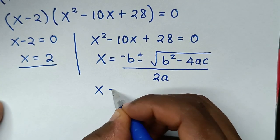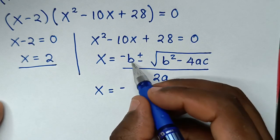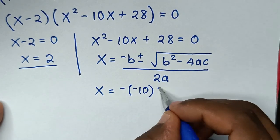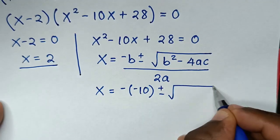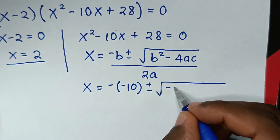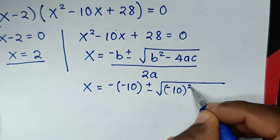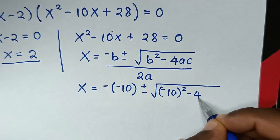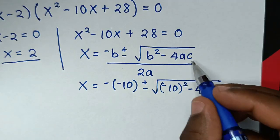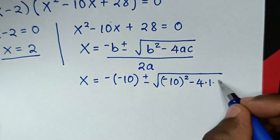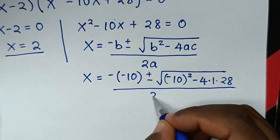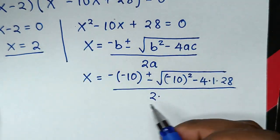Substituting values: b = -10, so -b = 10. Then b² = (-10)² = 100. We have 4 × a × c = 4 × 1 × 28 = 112. The denominator is 2 × a = 2 × 1 = 2.